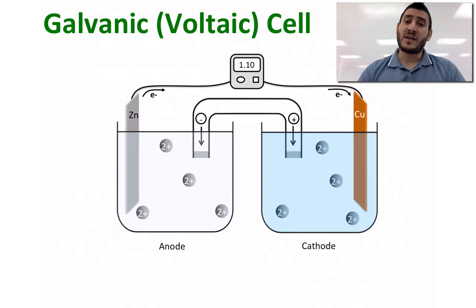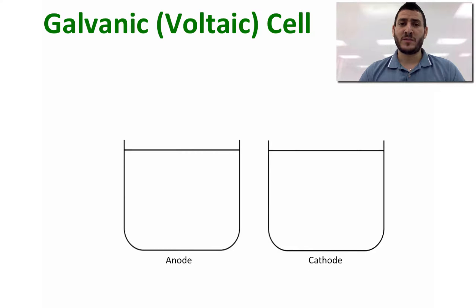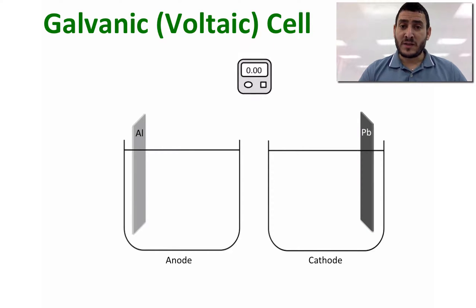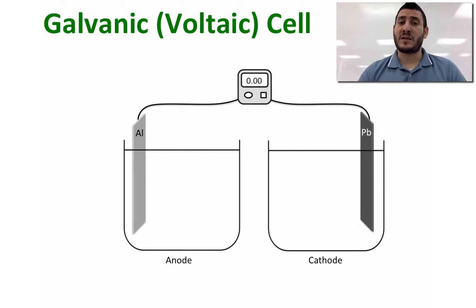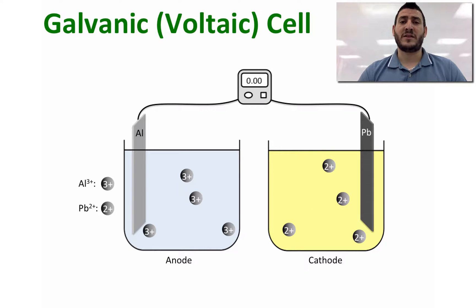How can we prepare a galvanic cell? To prepare a galvanic cell you will need one compartment for the anode, another compartment for the cathode. We will use two electrodes — for example, one aluminum and one lead — and a voltmeter that will help us measure the cell potential. We will fill each compartment with the corresponding solution containing aluminum and lead ions.